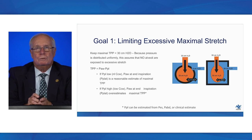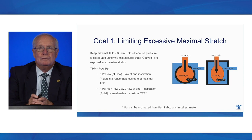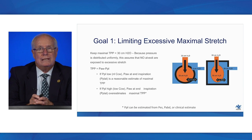Let's talk about how to manage this. Our first goal is to eliminate excessive maximal stretch by keeping the transpulmonary pressure less than 30 cmH2O. Since pressure distributes uniformly, this assures no alveoli are exposed to excessive stretch. However, we usually don't measure transpulmonary pressure directly — that would require pleural pressure measurement, perhaps an esophageal balloon. Instead, we measure plateau pressure in the airway — the end-inspiratory pressure under no-flow conditions.